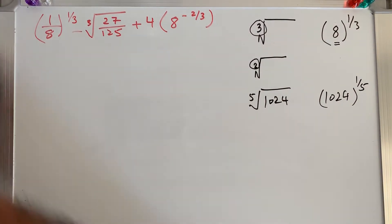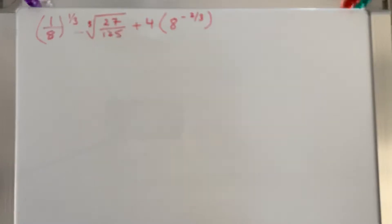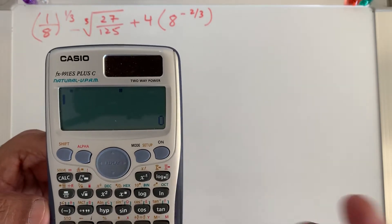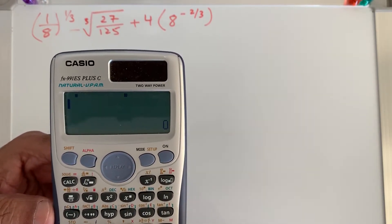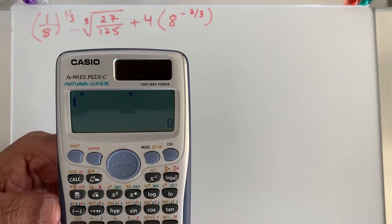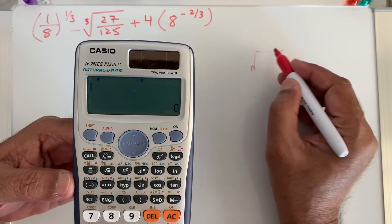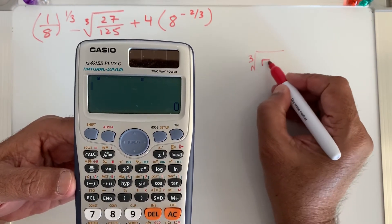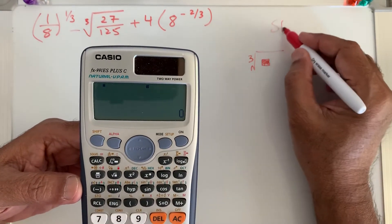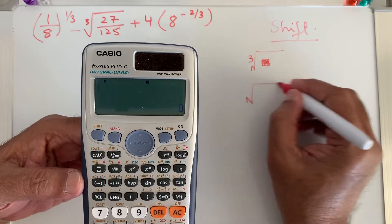Cube root starts in grade 11, but we have also learned it in previous grades. Today I will show you how to use the calculator. You can see a button with a red sign on top. Red sign means second function — you have to press the shift button first and then use that button.